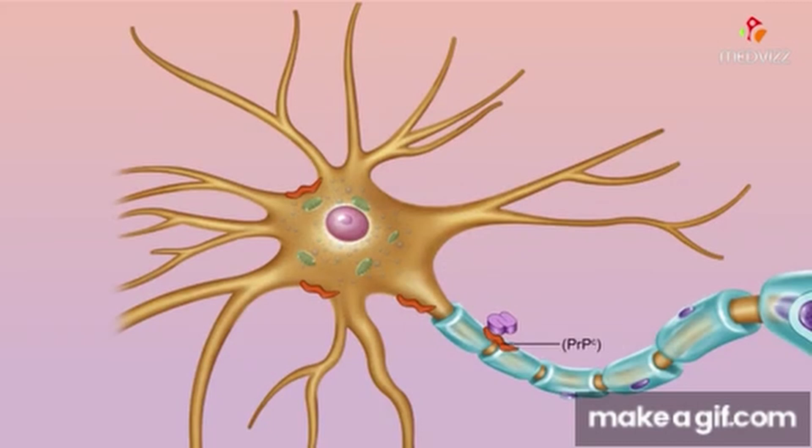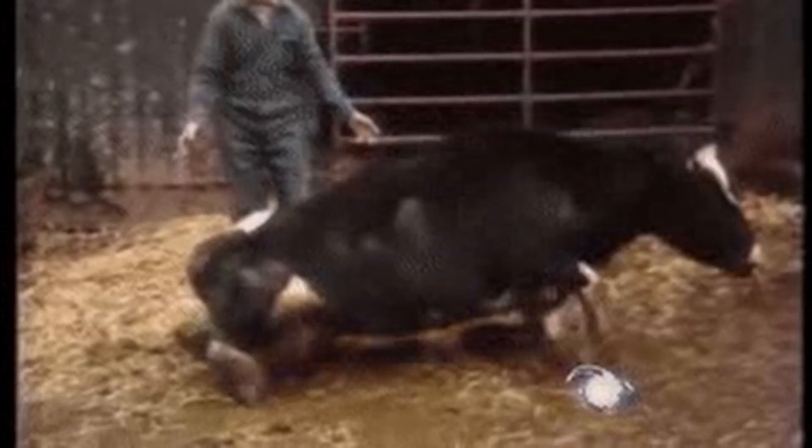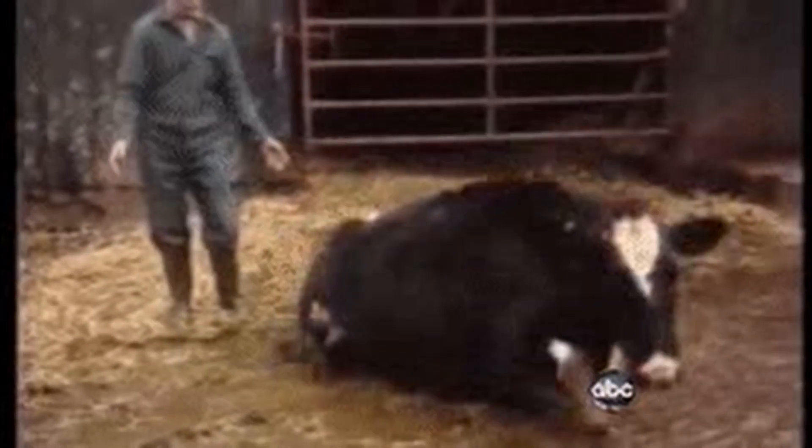The death cap follows a fascinating life cycle. Let's explore it in detail. Basidiocarp formation: The life cycle begins when two fungi of opposite mating types come together. They undergo plasmogamy, where their hyphal walls fuse, allowing them to coexist. This fusion gives rise to the basidiocarp, which is the familiar mushroom structure.